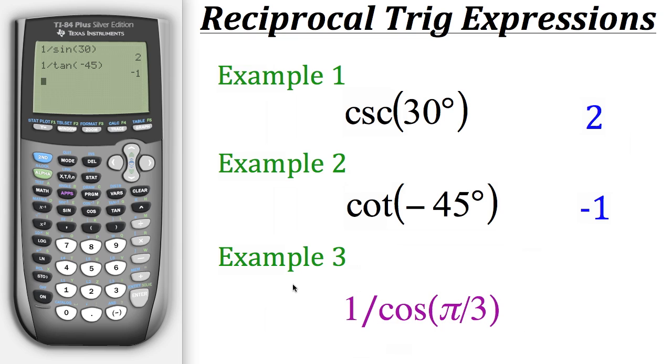Let's do that. We have 1 then divided by the cosine of pi over 3. Now before we hit enter, we need to remember that we're not using degrees anymore. This time our angle is being measured in radians, so we need to change the mode on our calculator to also be in radians.